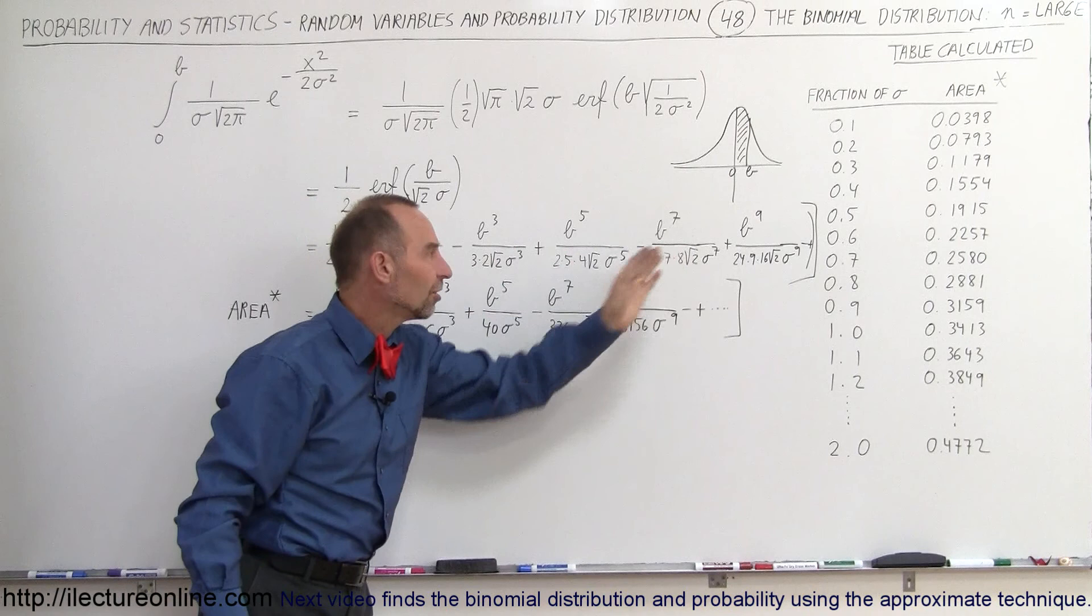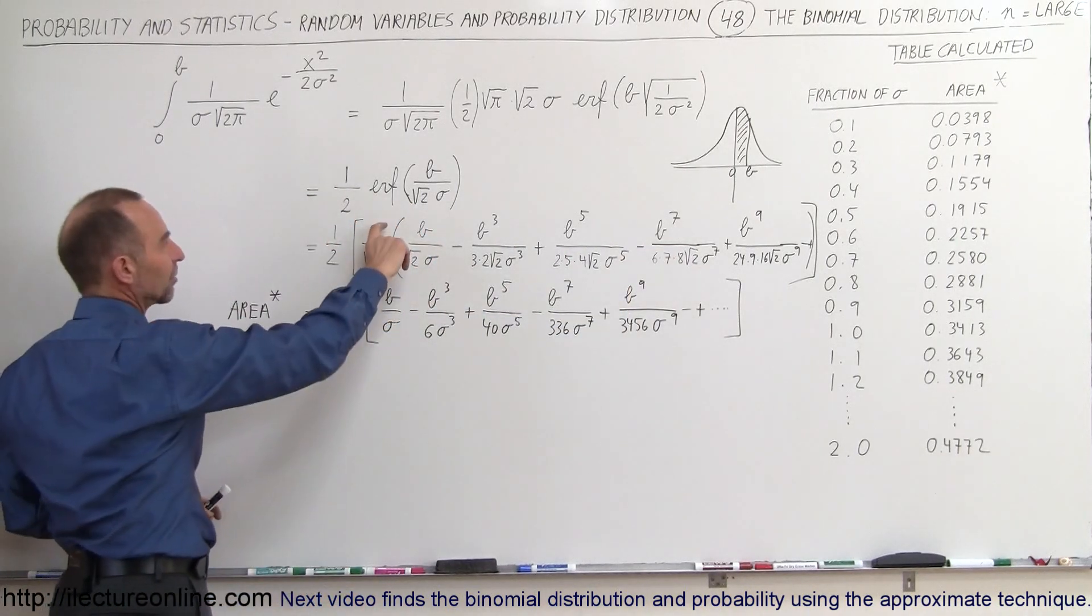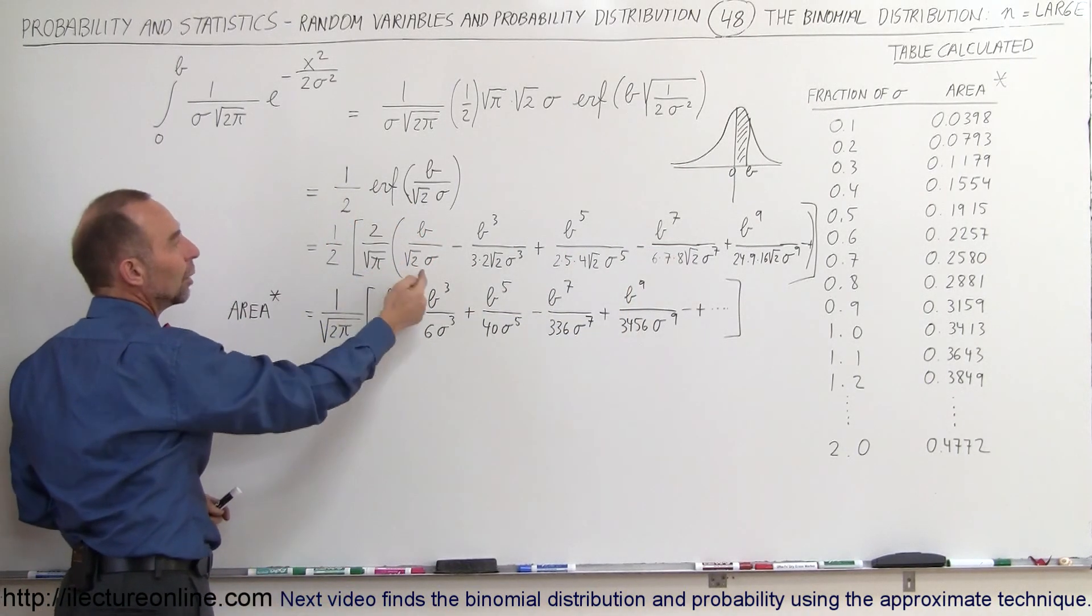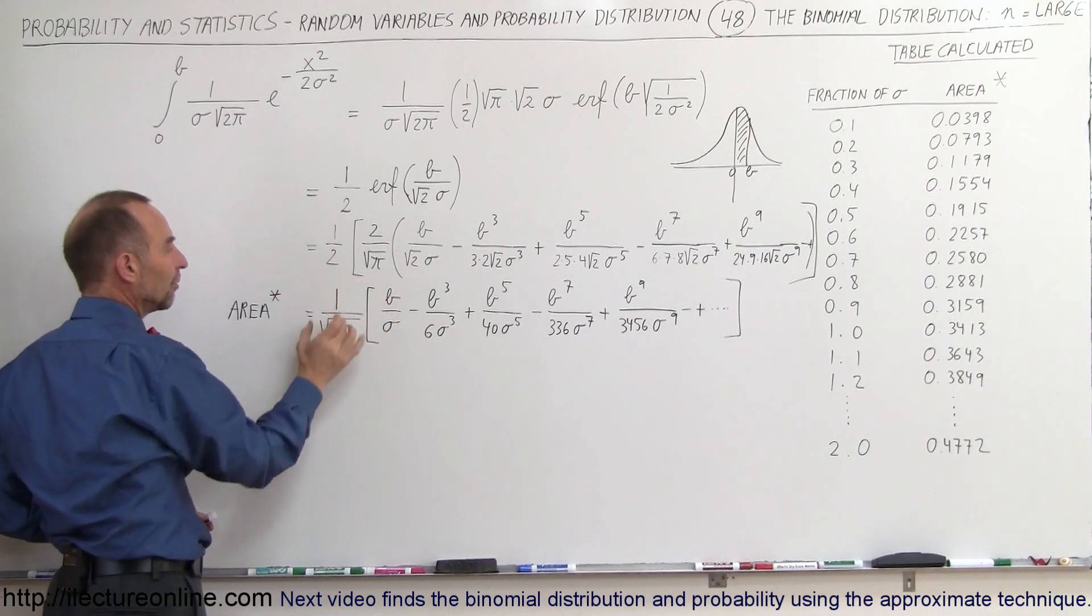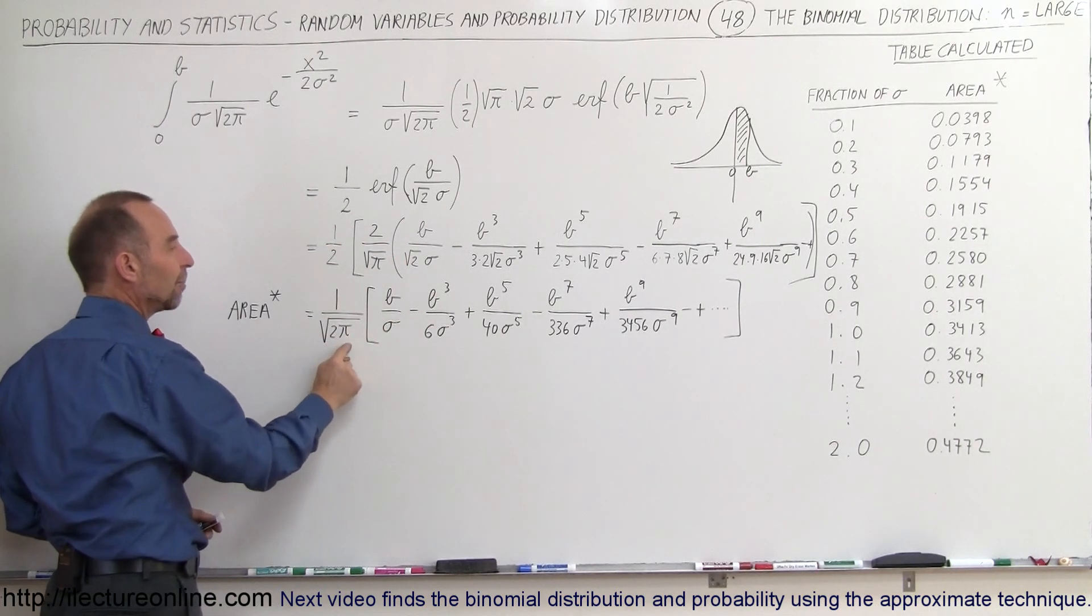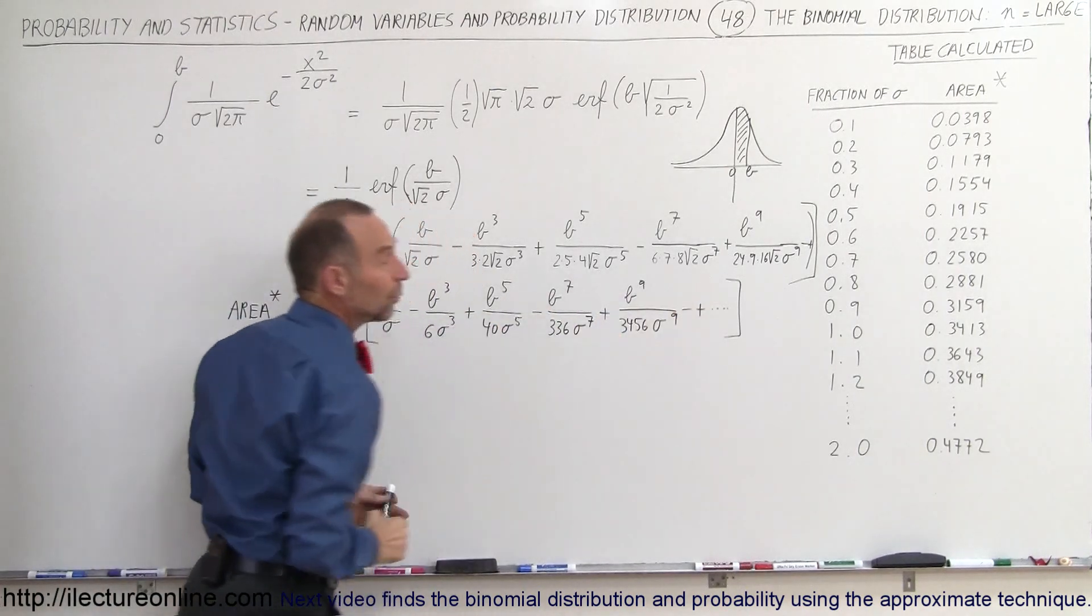Since the error function is defined as this, we can see that we can factor out a two divided by the square root of pi. We can also factor out the square root of two. The two cancels out, so you end up with one divided by the square root of two times pi times this quantity right here.